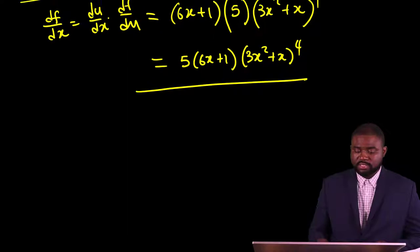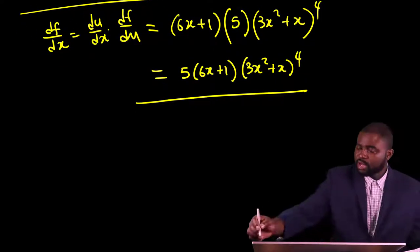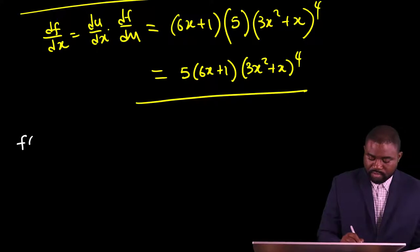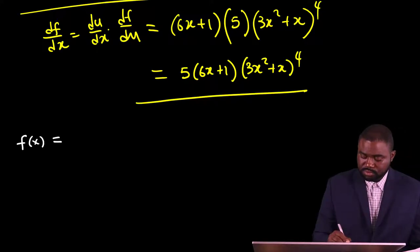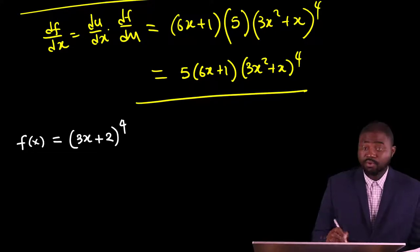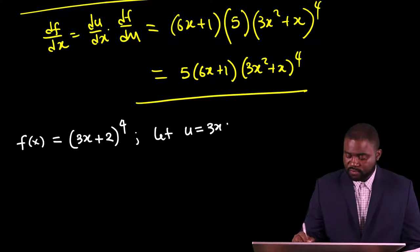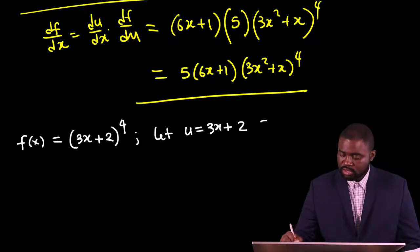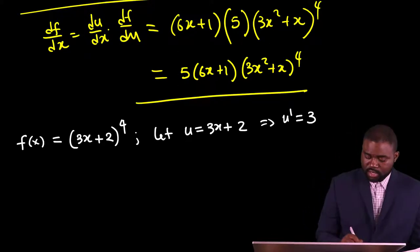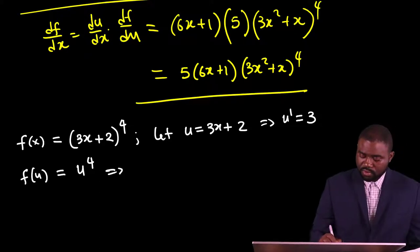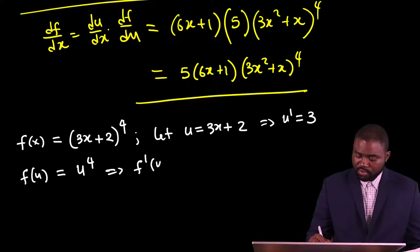Let me do one last example. If we have f of x equal to (3x + 2) raised to the power of 4, we could say let u be equal to 3x plus 2. This would mean that u prime is equal to 3. Hence, f of u is equal to u raised to the power of 4, which means that f prime of u is equal to 4u raised to the power of 3.